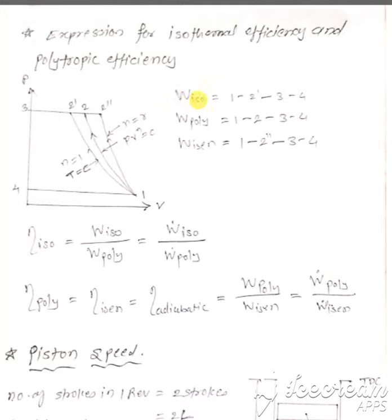Work for isothermal process is represented by area 1-2 prime, which is minimum. Work done for polytropic process is represented by area 1-2-3-4. Work done for isentropic process is represented by area 1-2 double prime.